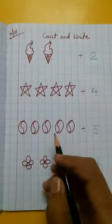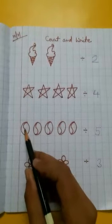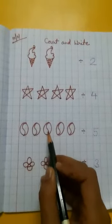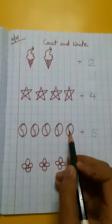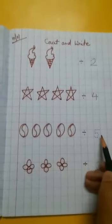And how many walls? One, two, three, four, five. So write here number five.